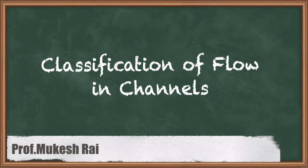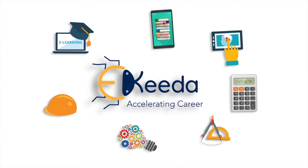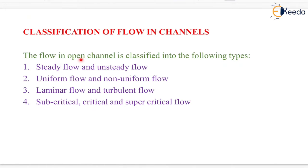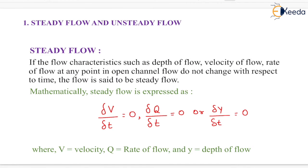Hello students, today we are going to study classification of flow in channels. Flow in open channel is classified into the following types: the first one is steady flow and unsteady flow; next is uniform flow and non-uniform flow; another one is laminar flow and turbulent flow; and another one is subcritical, critical, and supercritical flow. Now we will start with the first classification, that is steady flow and unsteady flow.